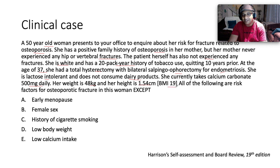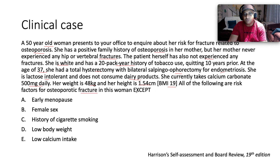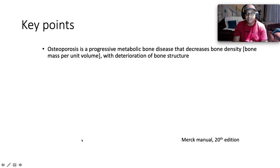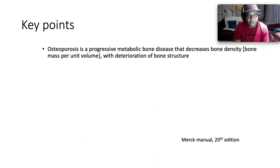Her weight is 48 kilograms, height is 1.54 meters, and her BMI is just 19. The question is: all of the following are risk factors for osteoporotic fracture in this woman with one exception. Is it A) early menopause, B) female sex, C) history of cigarette smoking, D) low body weight, or E) low calcium intake?